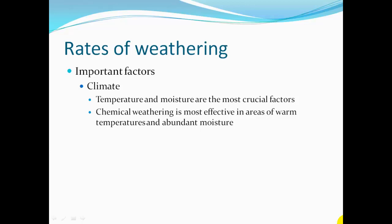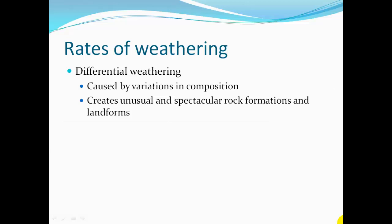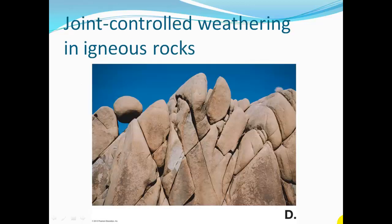Differential weathering is caused by variations in composition. Harder, more resistant rock layers erode slower than others, which creates very unusual and spectacular rock formations and landforms. Here are some interesting rock formations where joint-controlled weathering occurs in igneous rocks. Where cracks and joints exist, moisture got in and froze and thawed as temperatures changed, cracking the rock, and additional water and wind weathering created these interesting shapes.